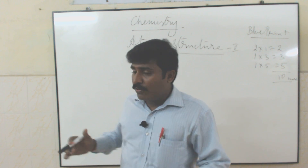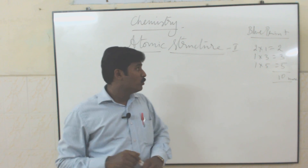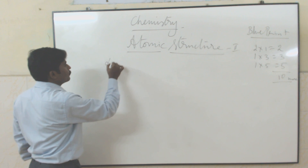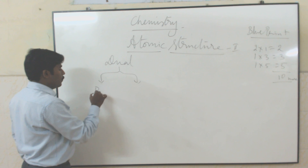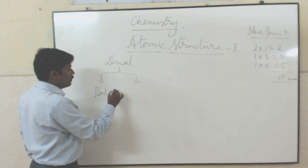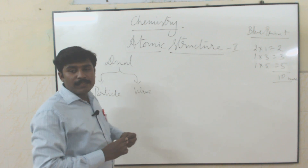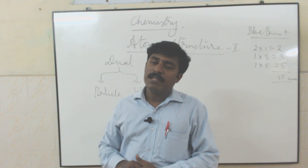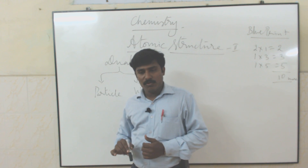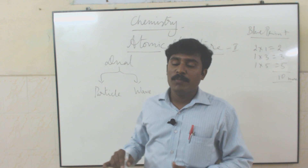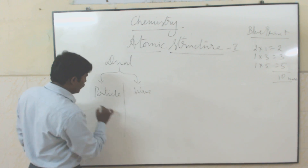Today first we are going to learn about the properties of electrons. Electrons have dual character. What do you mean by dual character? One is particle character, another one is wave character — that is the proved one. This is an important 3-mark question: what is the difference between particle and wave character?